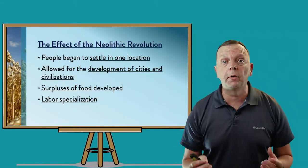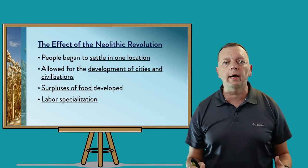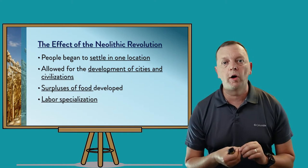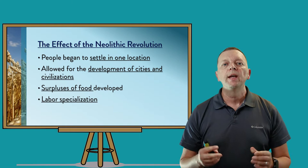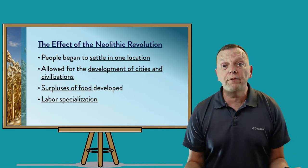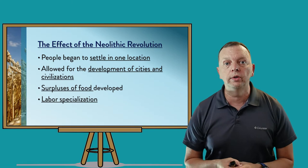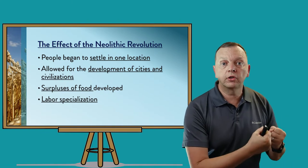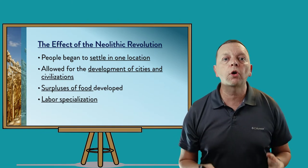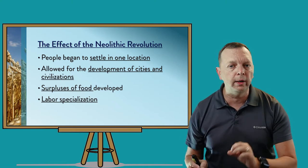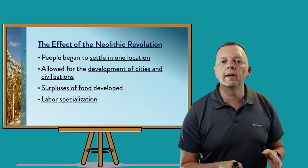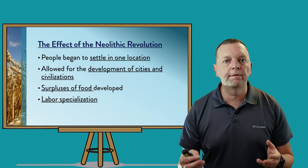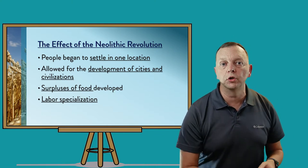The Neolithic Revolution had incredible effects. First of all, for the first time in the history of mankind, people began to settle in one location — they didn't have to keep moving. This allowed for the development of cities and then civilization. If it were not for the Neolithic Revolution, quite frankly, we would not have civilizations like we do today. The other thing that happened is that because we were able to produce our own food, we started having surpluses of food which we could trade. And the Neolithic Revolution also brought labor specialization — for the first time, not everyone had to focus on getting food, and other people were able to go do different jobs.